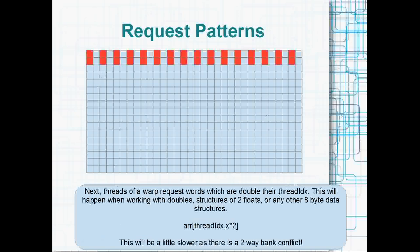What you want to avoid is patterns like arr[threadIdx.x * 2], which gives you a two-way bank conflict. You might get this if you're working with doubles, since a double takes up two words. If each thread is accessing a consecutive double from an array of doubles, you get this two-way bank conflict. You might also get it with structures of two floats or any other eight-byte data structure. The actual read from shared memory into registers will take twice as long — about four clock ticks.